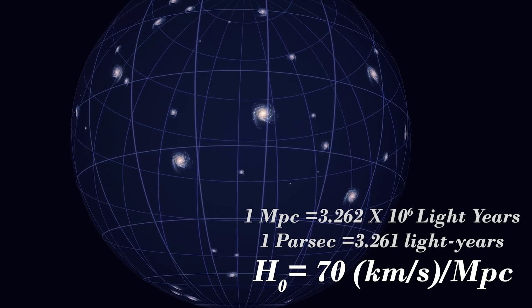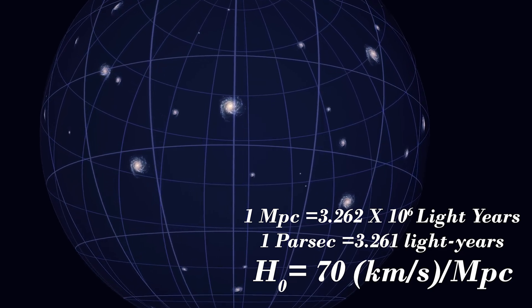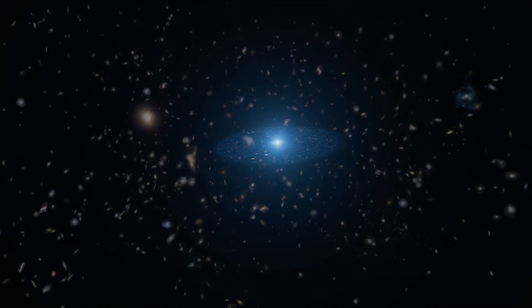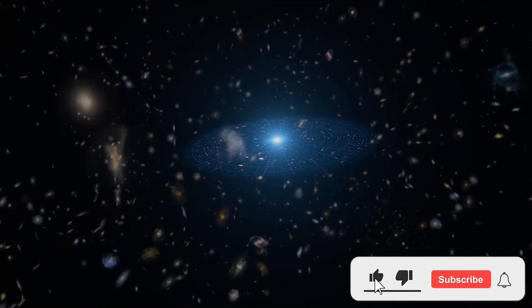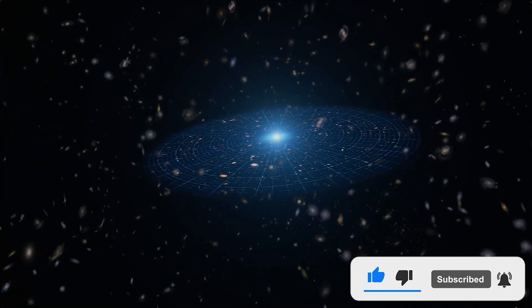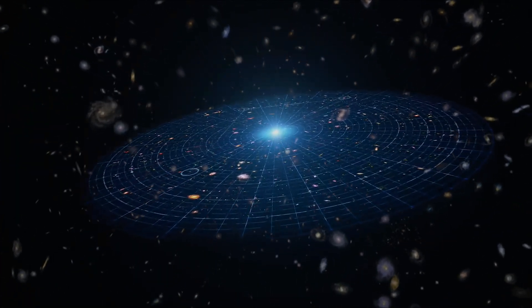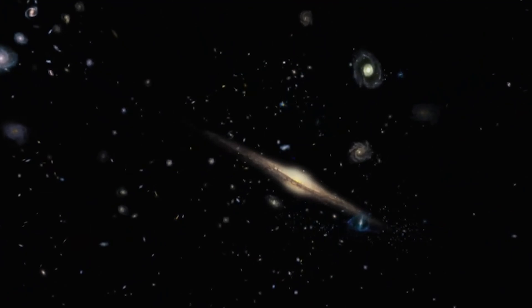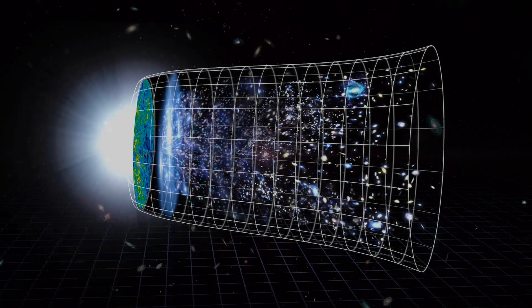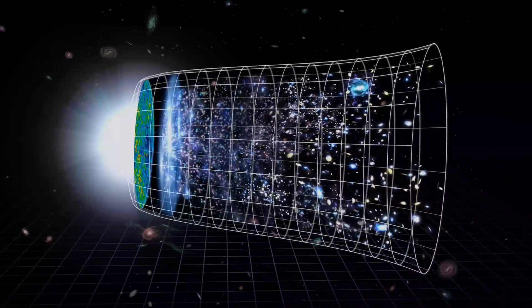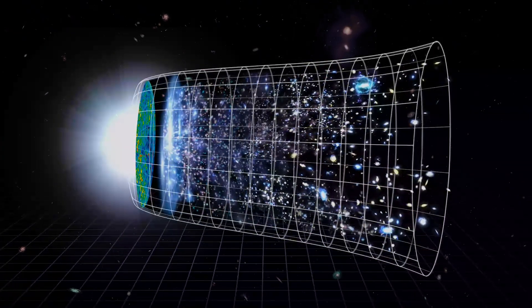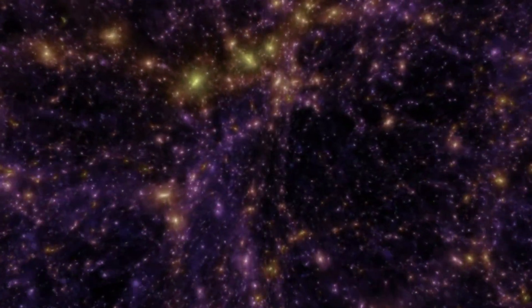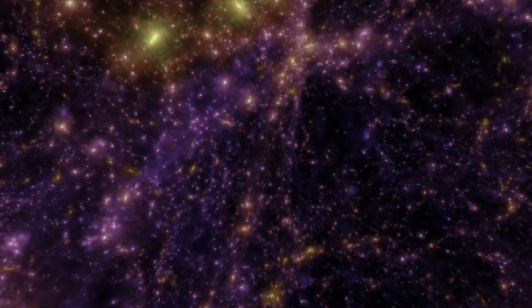Today the value of the expansion rate of our universe is 70 kilometers per second per megaparsec. One megaparsec means 3.261 light years. This means a galaxy at a distance of one megaparsec is shifting away from us at a speed of 70 kilometers per second, and this expansion is increasing with every megaparsec at a compound rate.